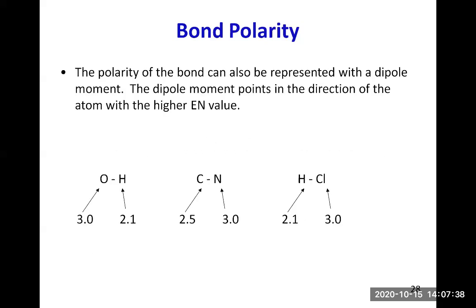The polarity of a bond can also be represented with a dipole moment — an arrow with a plus sign at the tail end. The dipole moment points in the direction of the atom with the higher electronegativity value. In the O–H bond it points toward oxygen; in the C–N bond the arrow points from carbon to nitrogen; and in HCl the arrow points toward chlorine. You can choose one representation or the other — it doesn't have to be both.